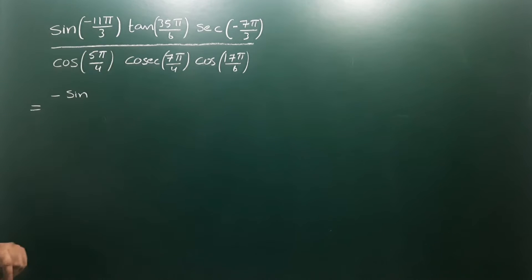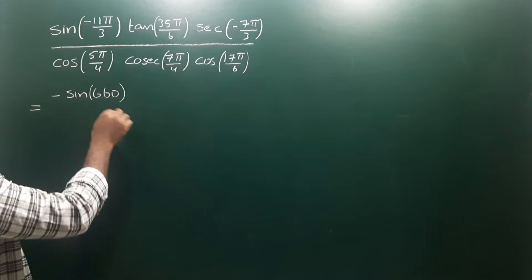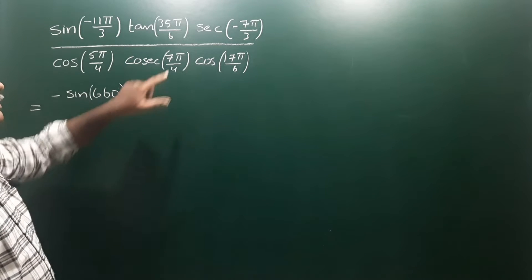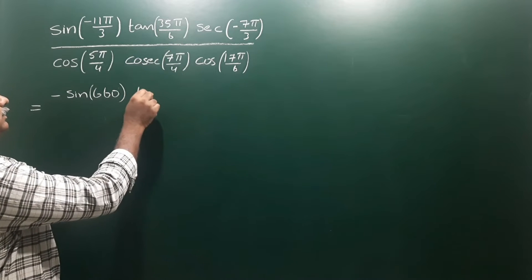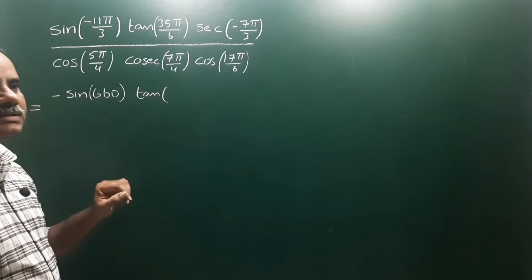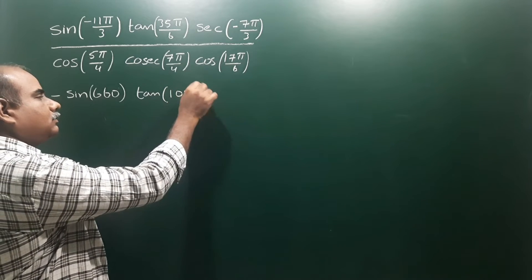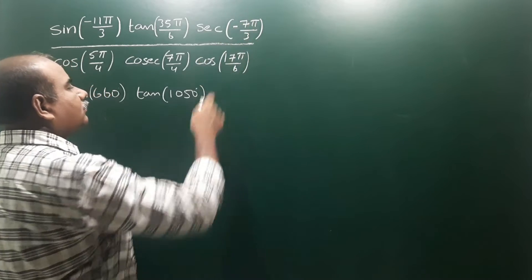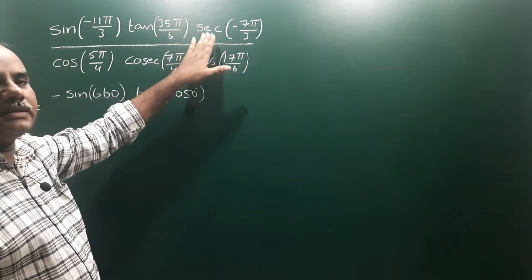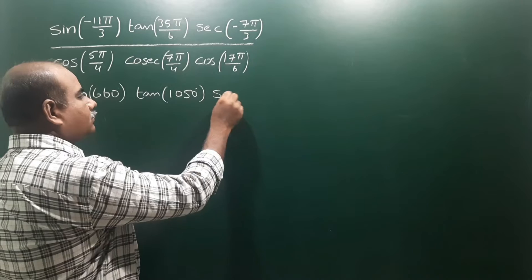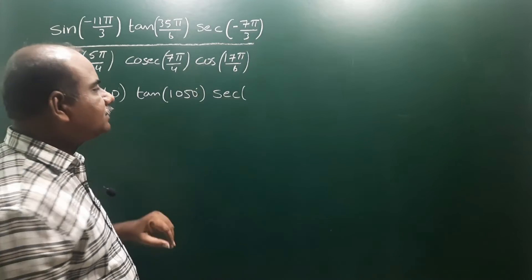For sin(-11π/3): π/3 is 60 degrees, so 11×60 = 660 degrees. For tan(35π/6): π/6 is 30 degrees, so 35×30 = 1050 degrees. For sec(-7π/3): negative angles are in the fourth quadrant; in the fourth quadrant secant is positive, so it becomes sec(7π/3). π/3 means 60 degrees, so 7×60 = 420 degrees.